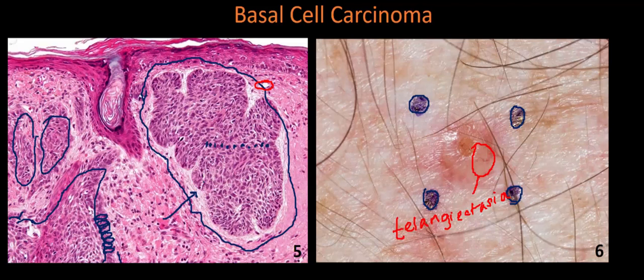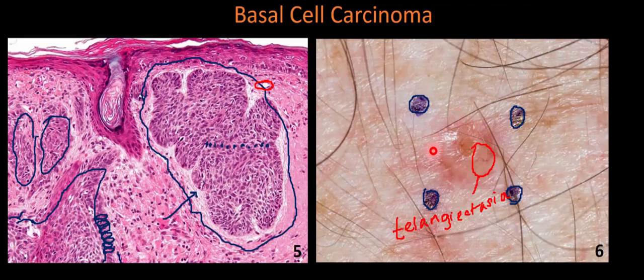An important histological-clinical correlation is what's absent: unlike SCC, this lesion doesn't show much scale. That's because, returning to the histology, most of the pathology is in the dermis — the accumulation of basaloid nests — with relatively little epidermal change. The lack of epidermal change means no hyperkeratosis and therefore no scale. Conversely, the raised, papular, almost nodular appearance is due to accumulation of those basaloid nests within the dermis.